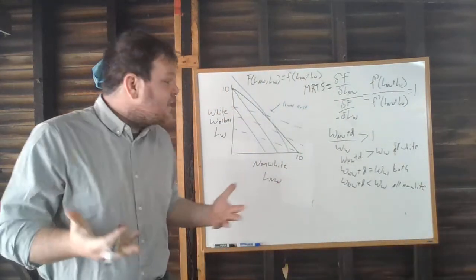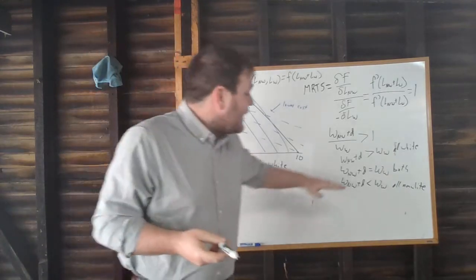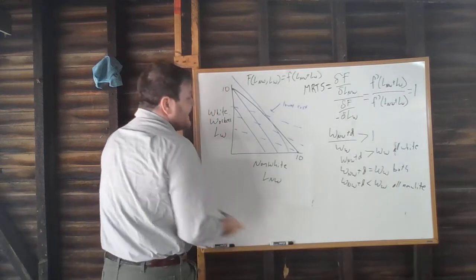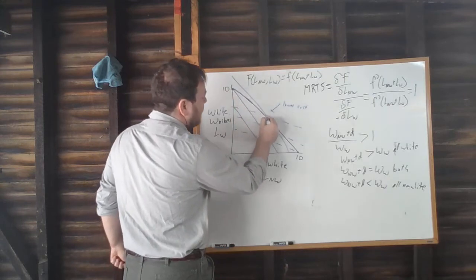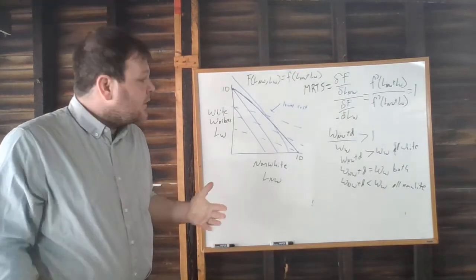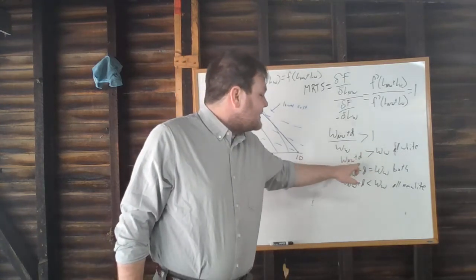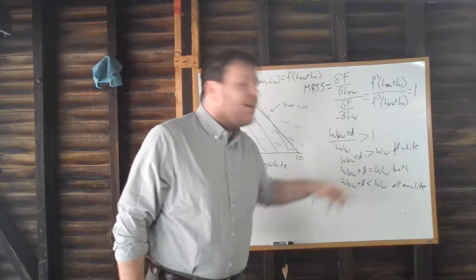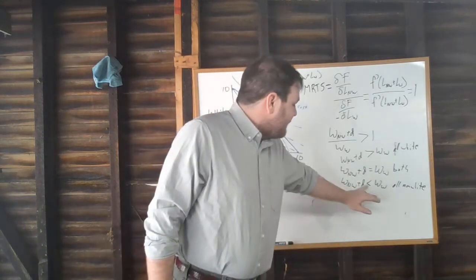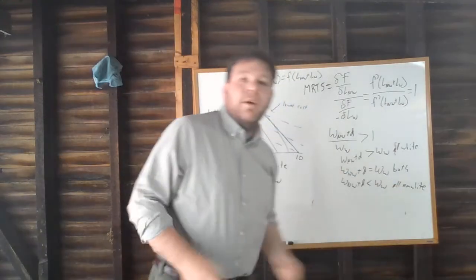Because white and non-white workers are perfect substitutes, it only makes sense to hire both types of workers if the ratio of costs is exactly the same as the ratio of productivity — in other words, if white and non-white workers cost exactly the same amount. Otherwise, we go with whoever we perceive as cheaper. If the wage gap is not large enough to offset our distaste, we hire only white workers; if the wage gap is large enough relative to our level of prejudice, we hire only non-white workers.